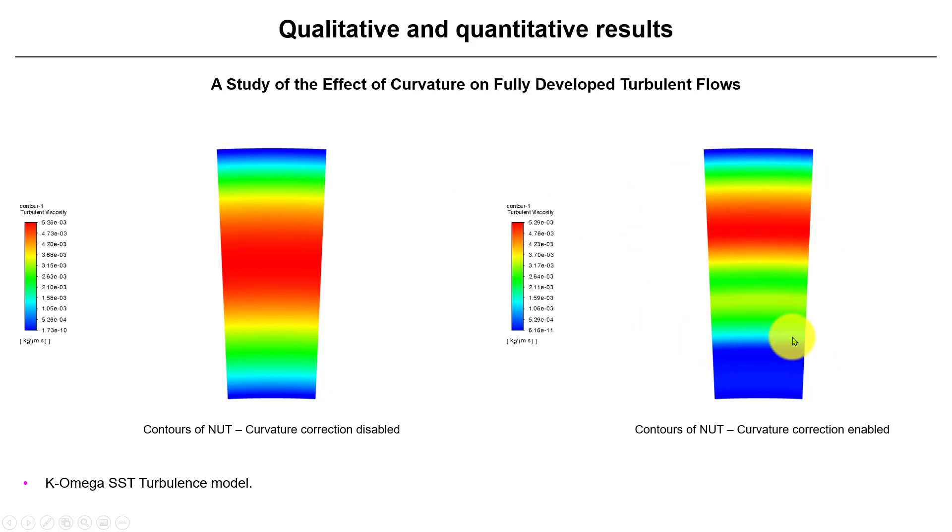Again, there is a strong influence of the strain rate and the spin tensor. So what this curvature correction is doing is just monitoring that and modifying the behavior of turbulence model according to those corrections.